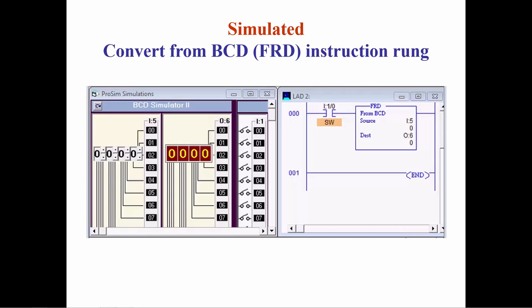For inputs from the thumbwheel switch between 0 and 9, the binary representation of the BCD value and the binary representation of the converted integer are identical. Above 9, the binary representations are different.